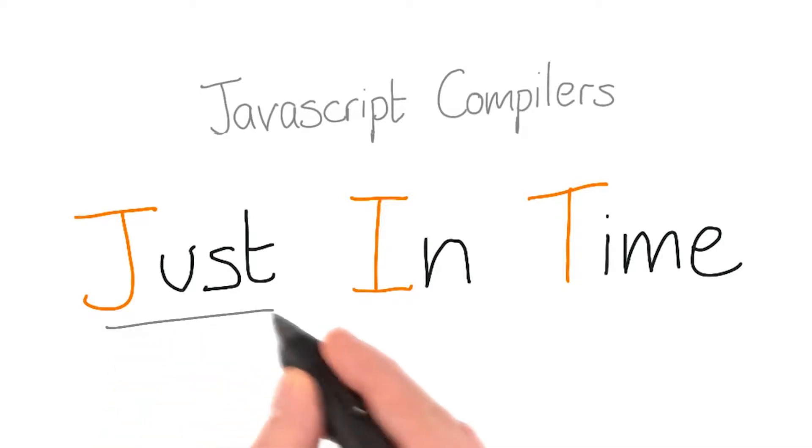It's done through a just in time compiler, or JIT. A JIT compiler will optimize the JavaScript bit by bit as it runs, and it's a brilliant but extremely complex engine.